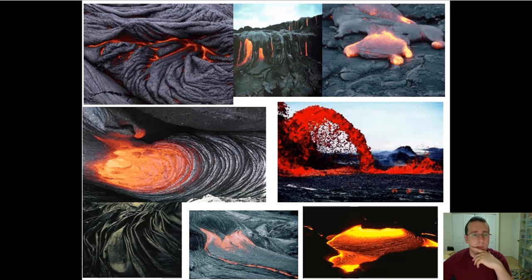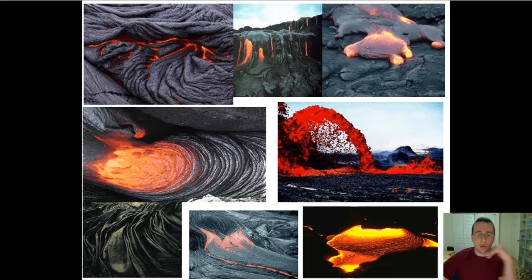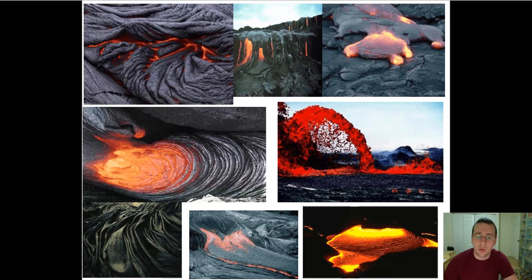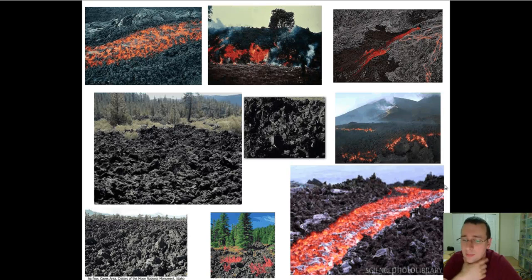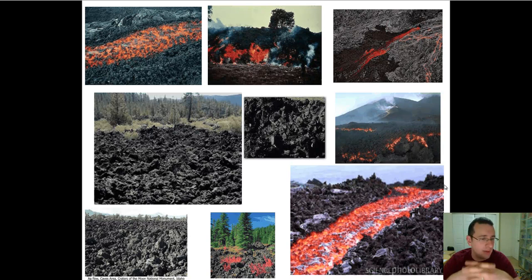Pahoehoe commonly forms on steep ground where the lava does not cool down fast, and it has more magnesium than silicon. If it flows fast, cools down slowly, and has more magnesium than silicon, you get pahoehoe. If the steepness of the ground is a little less, allowing the lava to cool down more, and the material has a little more silicon, you get AA lava, which is still very flowy but a little more blotchy and viscous than pahoehoe.